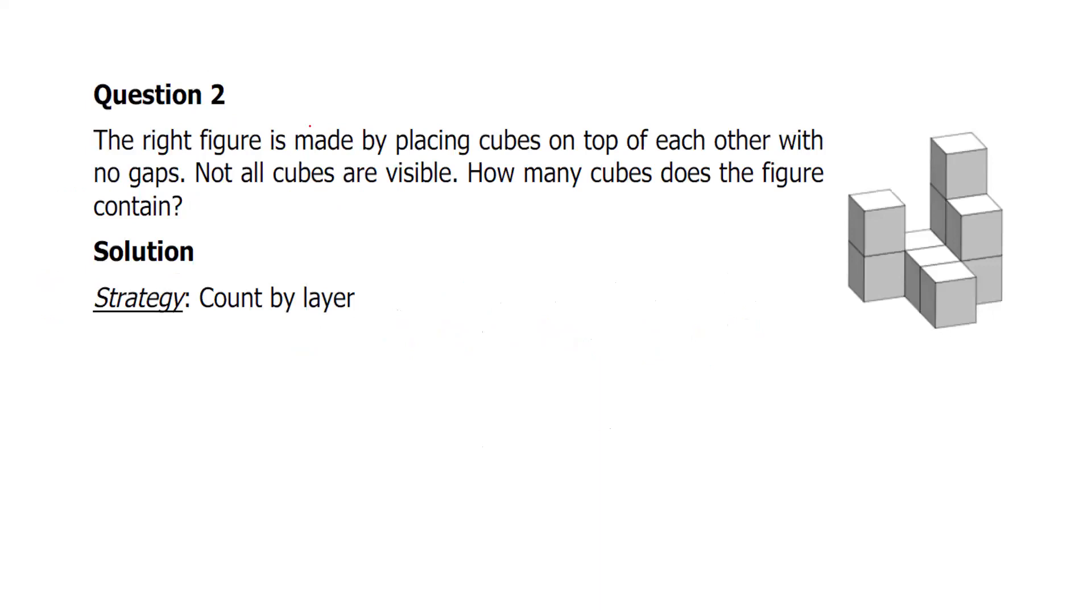Question number two says the right figure is made by placing cubes on top of each other with no gaps. Not all cubes are visible. How many cubes does the figure contain? Yes, you count: one, two, three, four, five, six, seven, eight, nine, but one below this, otherwise stacking is not possible. So total 10 cubes are possible. Only 10 cubes, right? Let's go ahead.